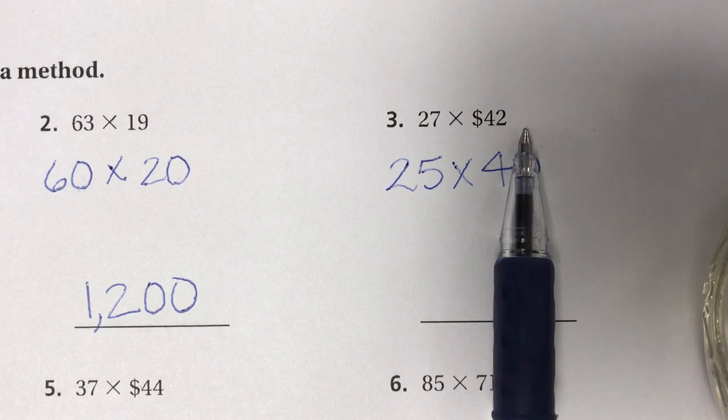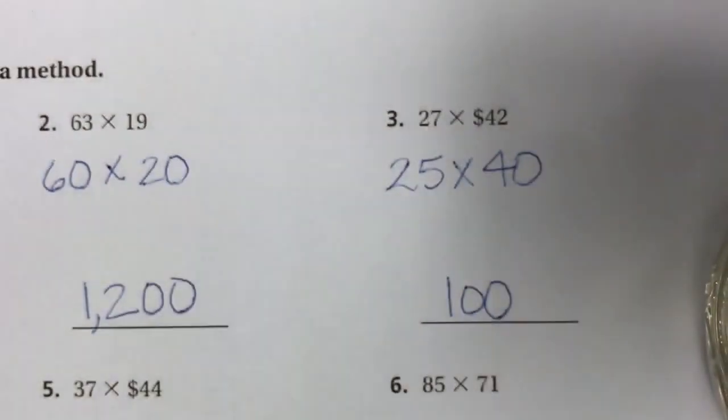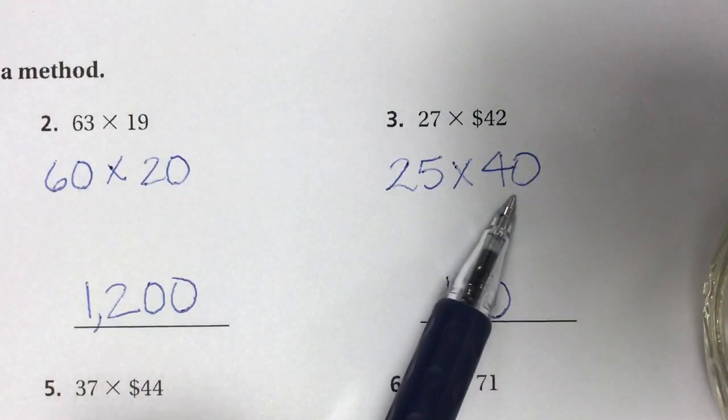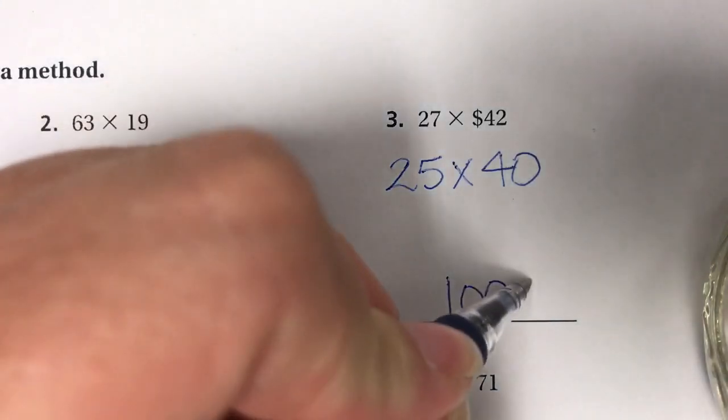Well, I can think: do I know what four quarters would equal? 25 times 4 is 100. I did cover up one zero, so I'm going to make sure I add that back on to my estimate.